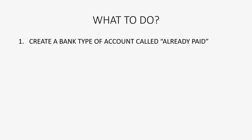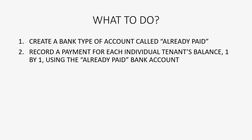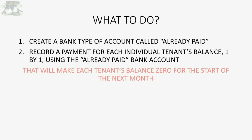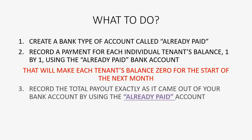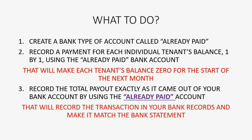Here's what we're going to do. First, we're going to create a bank-type account and call it 'Already Paid' or something to that effect. Then we're going to record a payment for each individual tenant's balance one by one using the Already Paid bank account — that will make each tenant's balance become zero. Then we have to record the total payout exactly as it came out of our bank account, using the Already Paid account, which will make the bank records match the bank statement.